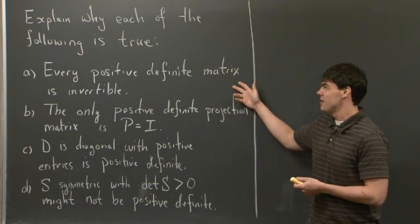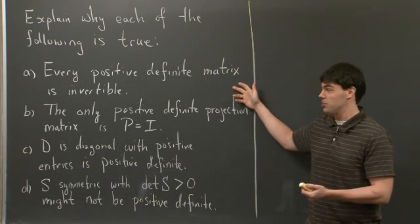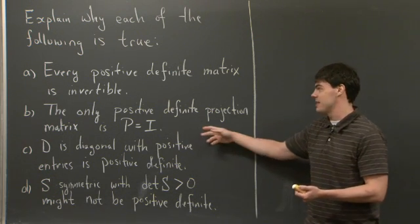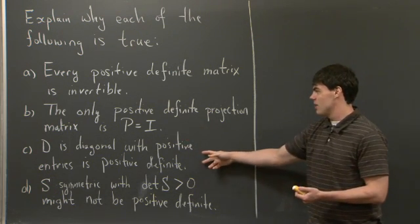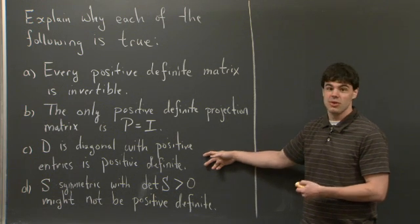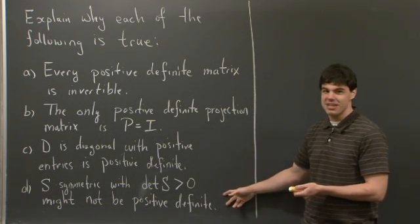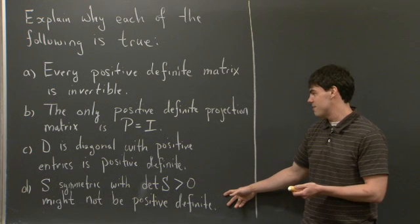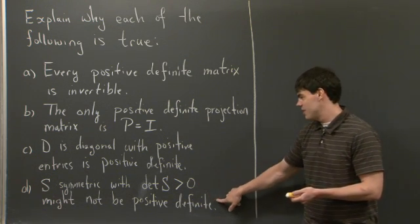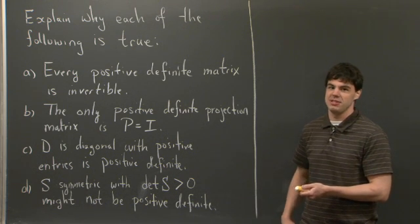First off, why every positive definite matrix is invertible; why the only positive definite projection matrix is the identity matrix; if D is a diagonal matrix with positive entries, show that it must also be positive definite; and lastly, if S is a symmetric matrix where the determinant of S is bigger than 0, show why this might not necessarily imply that it's positive definite.